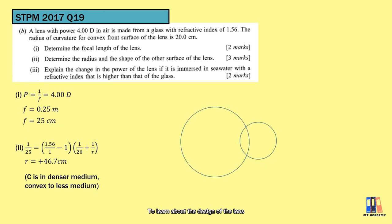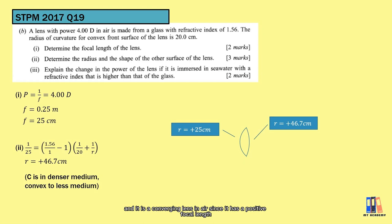To learn about the design of the lens, it is part of spherical material. It will be a biconvex lens with different radii, and it is a converging lens in air since it has a positive focal length.